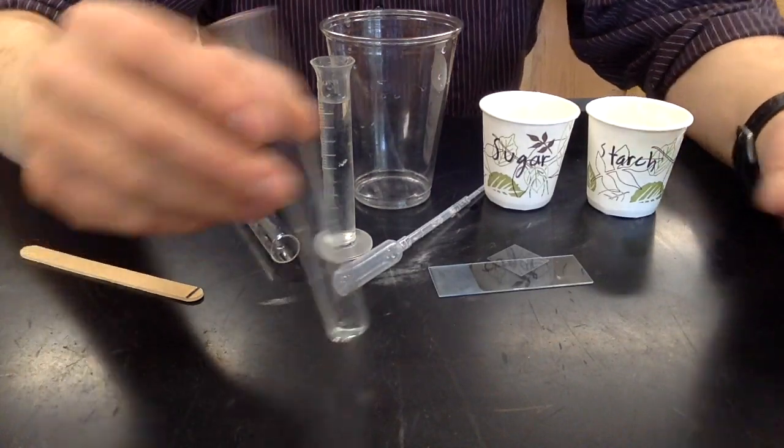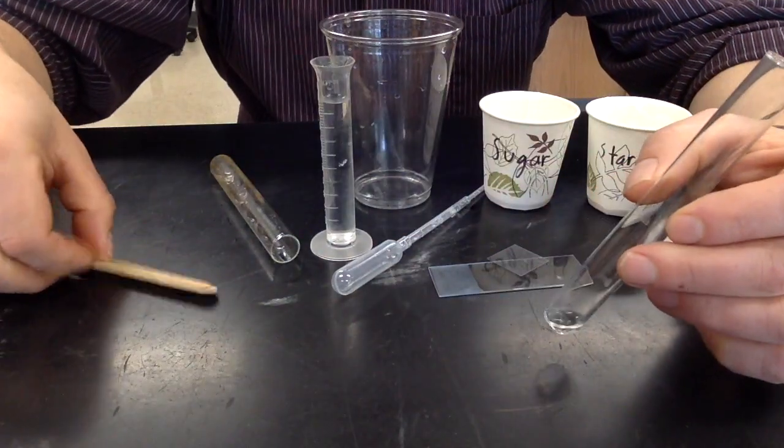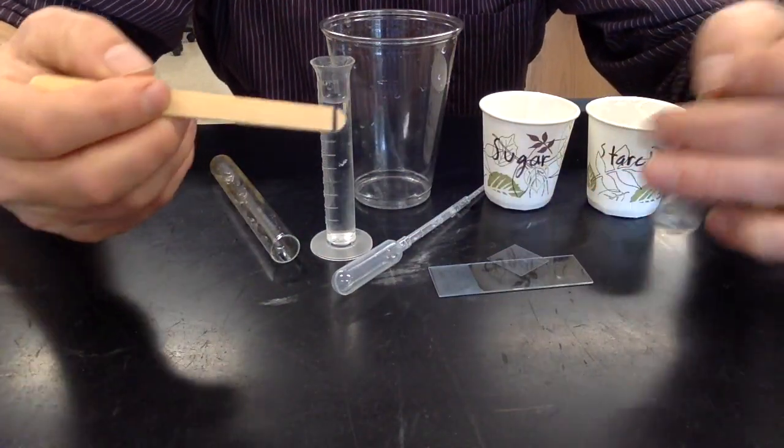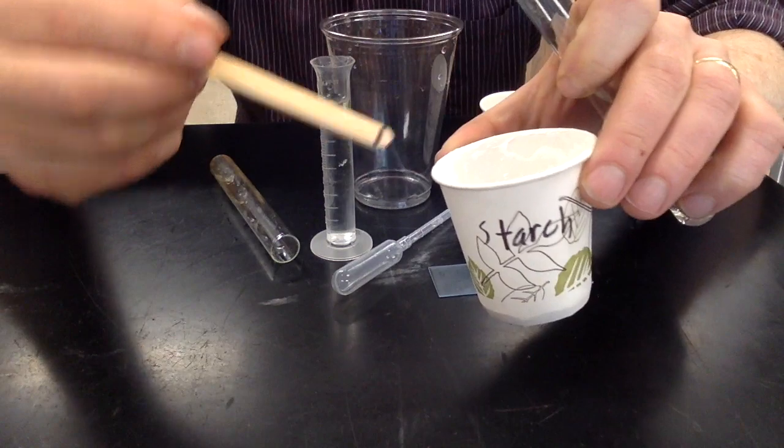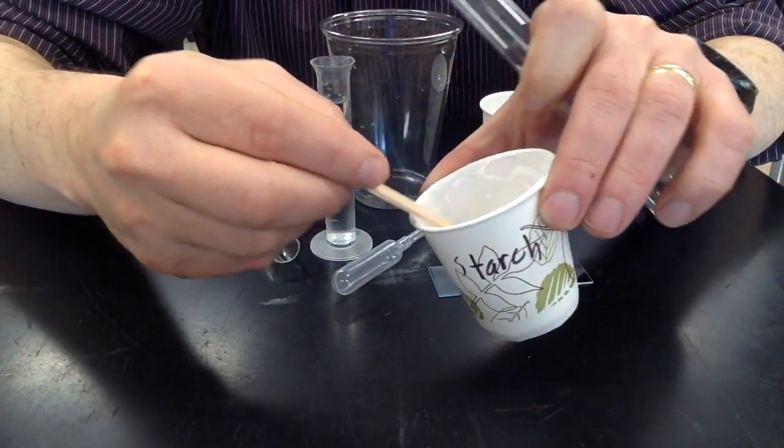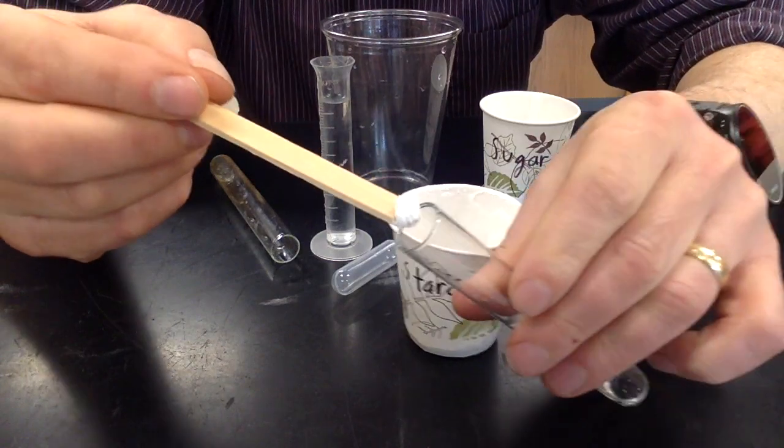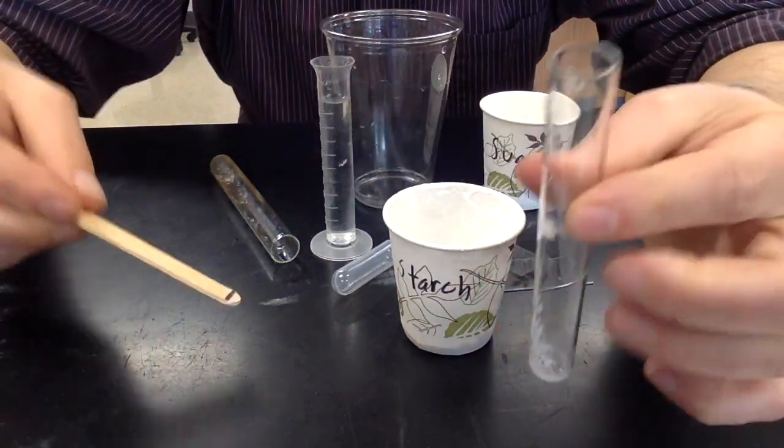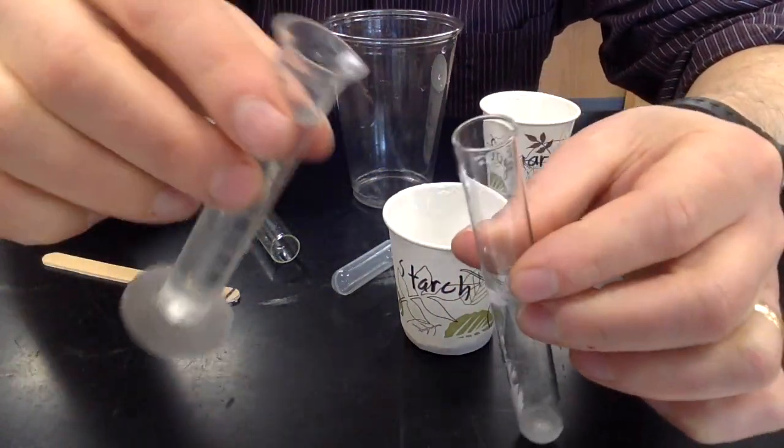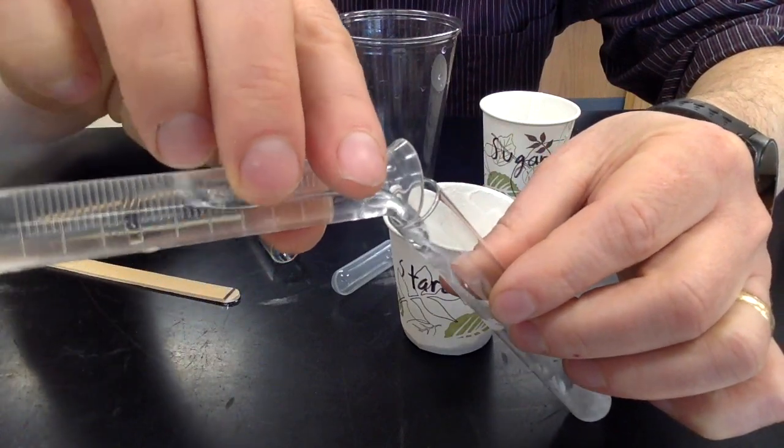You will conduct the solubility test for starch and sugar the same way we have done in the past. The popsicle stick is marked with a black line that should show you the amount, the size of a grain of rice. You select a small amount of the starch and the sugar, one at a time, and you add 10 milliliters of water to them.